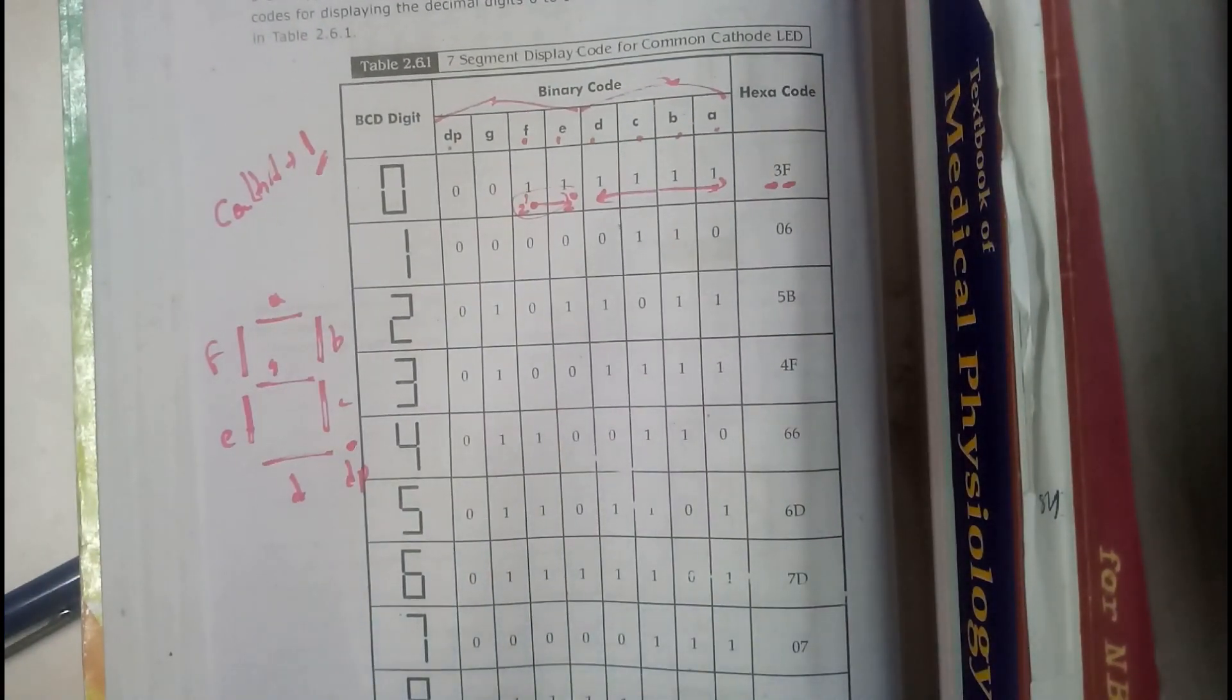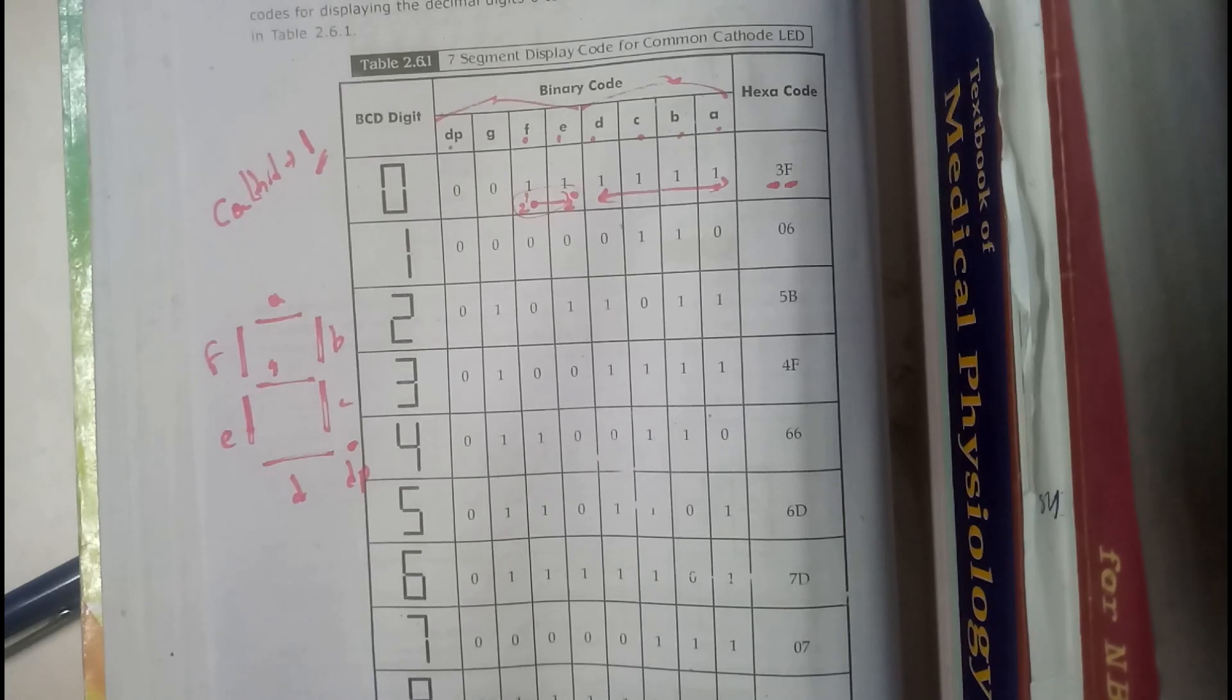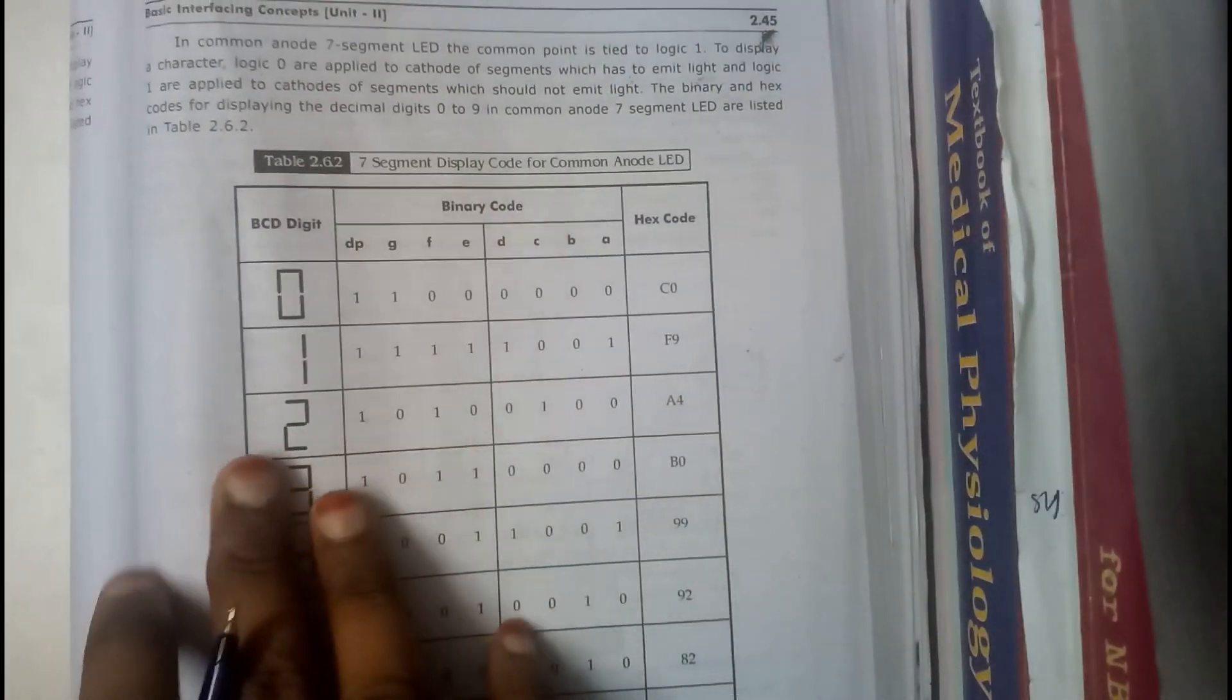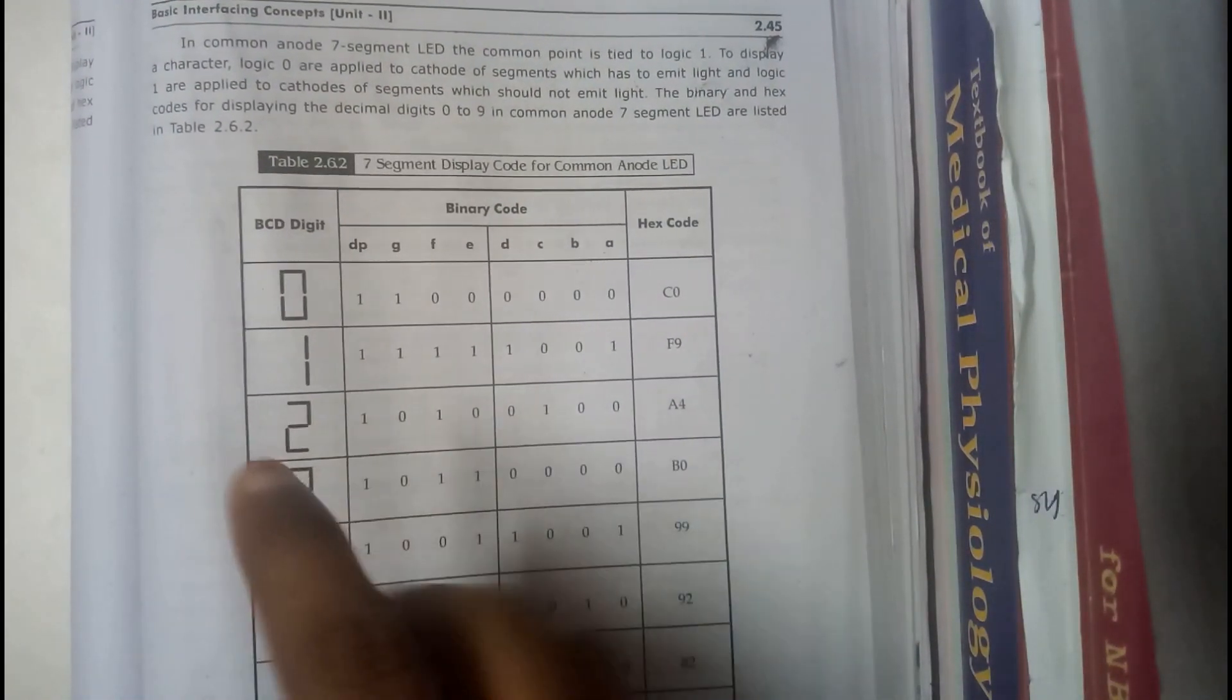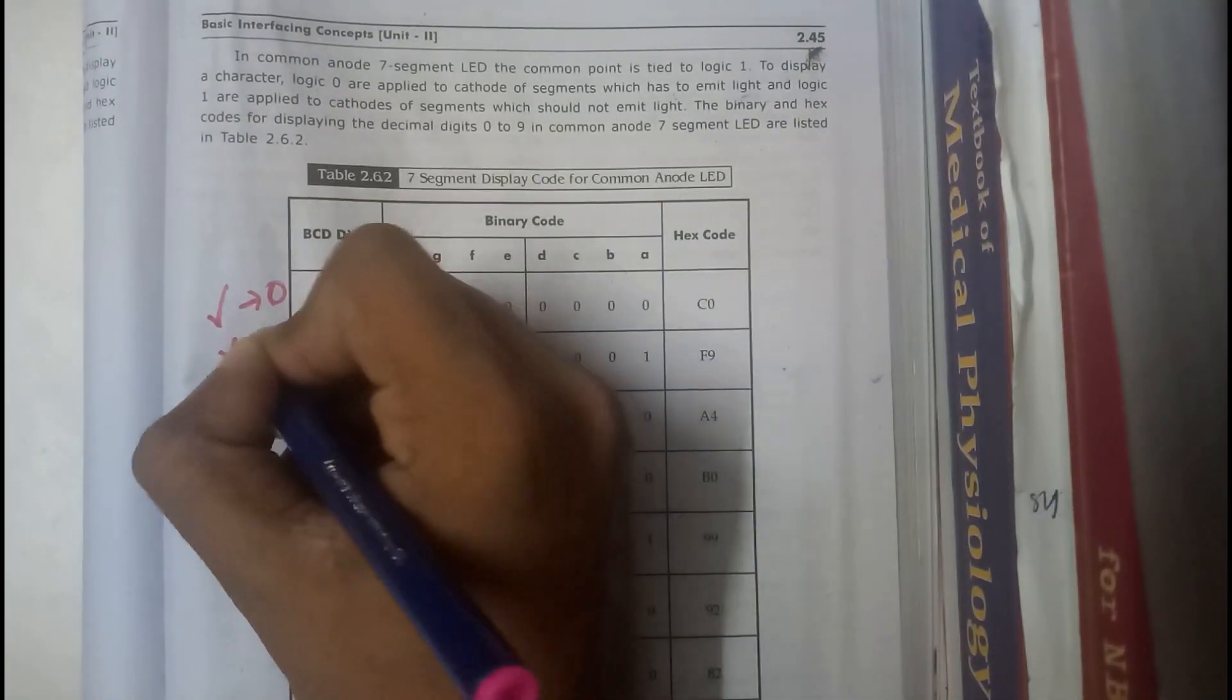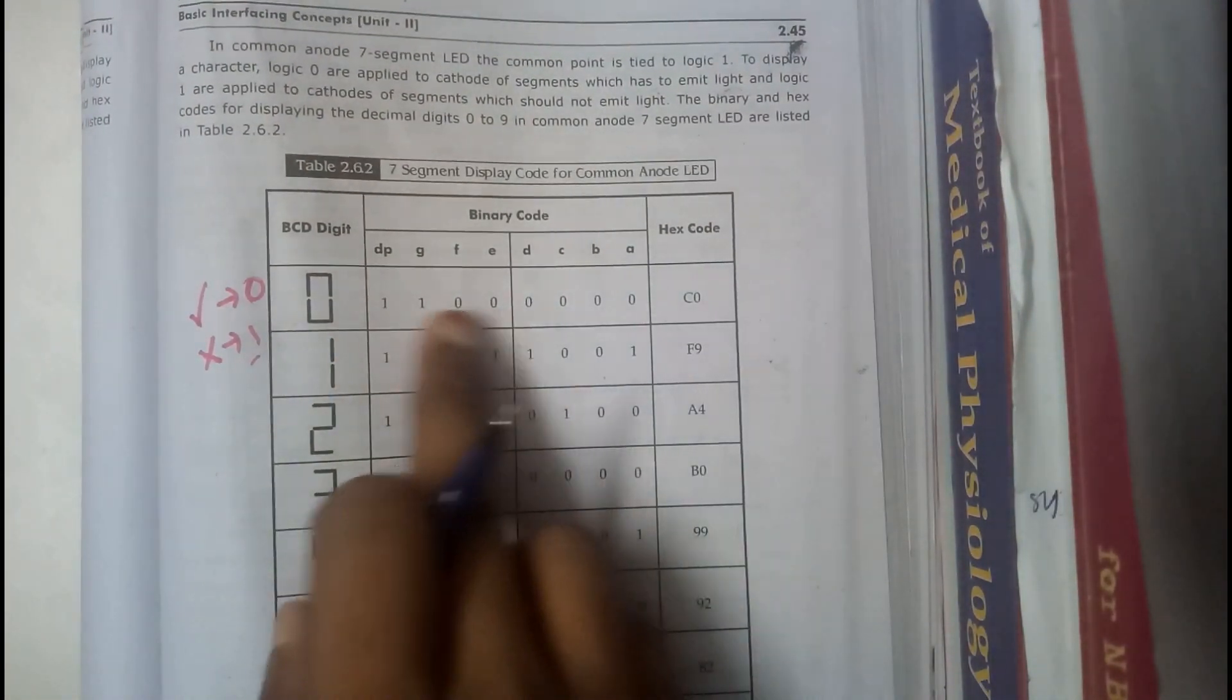So that's how this table is completely filled with different numbers. Just give me a second. Okay, so similarly the table for anode is right here. So anode will be completely opposite to that. In anode, if it is active we will be representing it with zero. If it is not active we will be representing it with one. That's the only difference, and the calculation will be doing the same way.